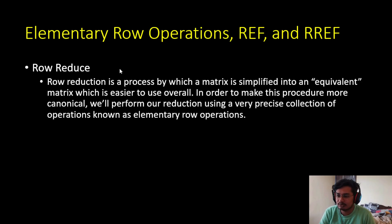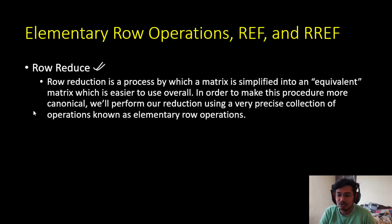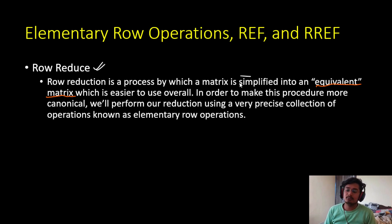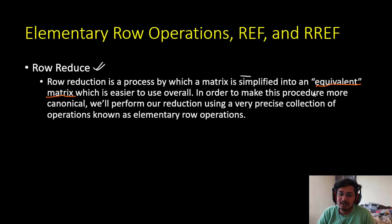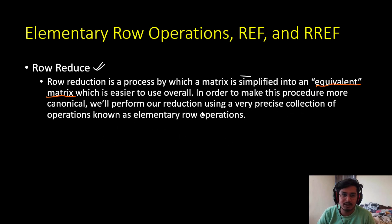Row reduction is a process by which a matrix is simplified into an equivalent matrix which is easier to work with. We have complex matrices, so we use row reduction to make that matrix easier to handle. In order to make this procedure more canonical, we will perform our reduction using a very precise collection of operations known as elementary row operations.